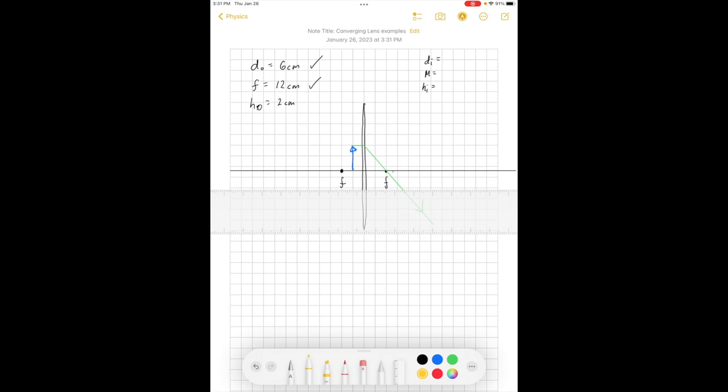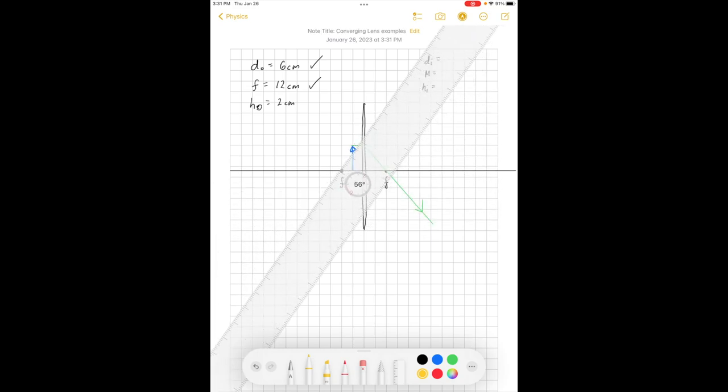Well, it's in front of the focus, so it doesn't really make sense to draw the ray, even though there is one, it doesn't make sense to draw the ray that does this, going in that direction because it never hits the lens.